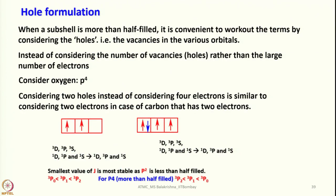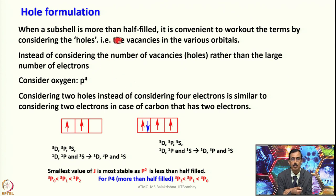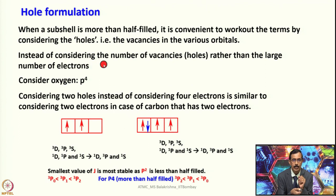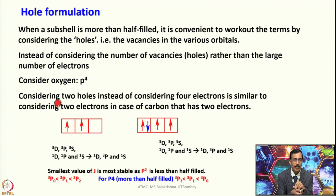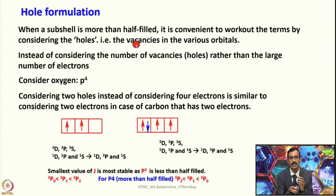Now let's discuss hole formulation. When a subshell is more than half-filled, it is convenient to work out the terms by considering the holes — the vacancies in the orbitals — rather than the larger number of electrons. For example, oxygen has 4 electrons in 2p, meaning it has 2 holes. Considering 2 holes is equivalent to considering 2 electrons as in carbon (P2), simplifying interpretation of spectral data.